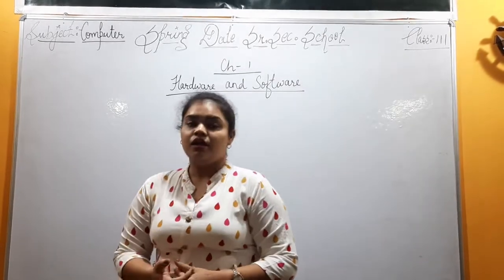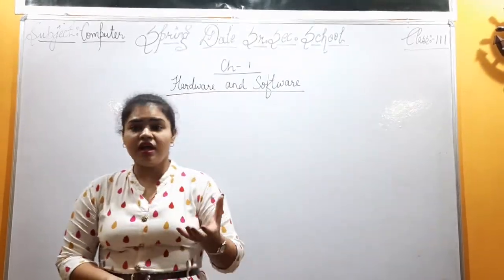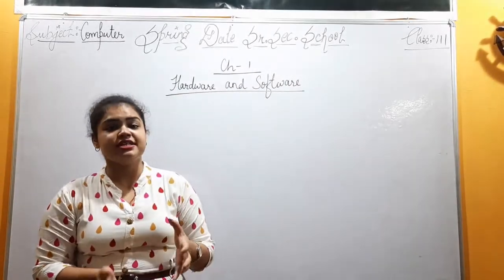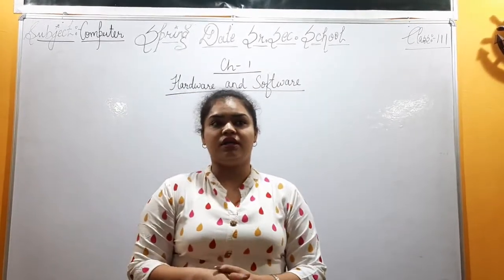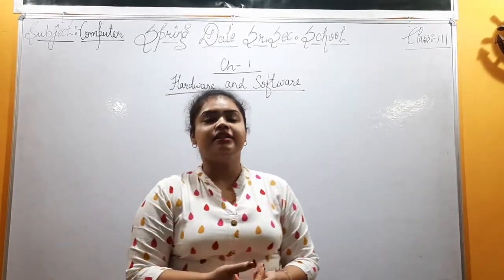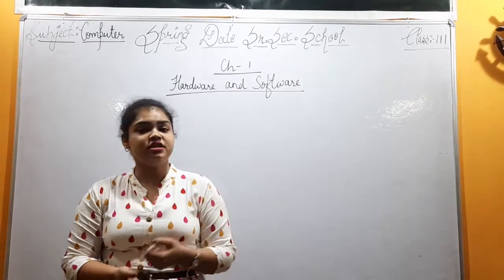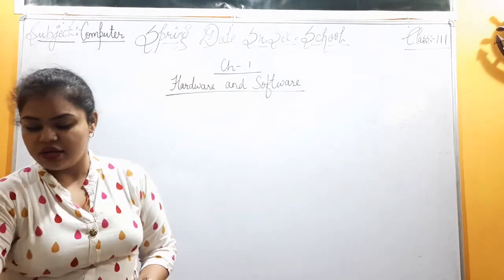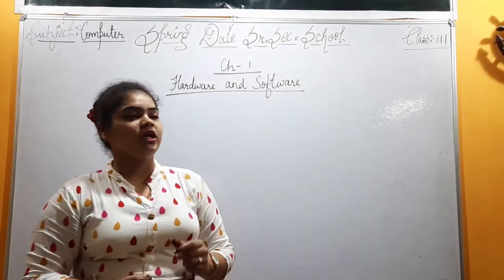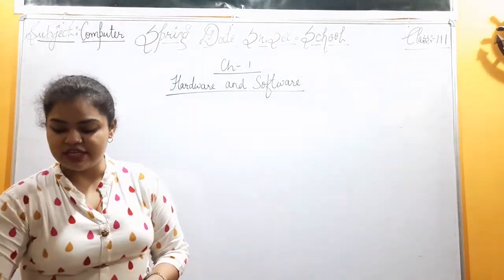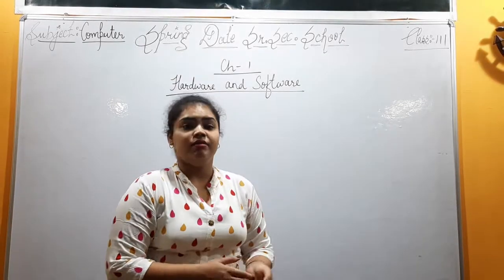Next we have internal and external devices. Internal devices include the hard disk, which is inside the computer. External devices include the CD and the pen drive. The full form of CD is Compact Disk. Now, have you all seen a pen drive? Let me show you.